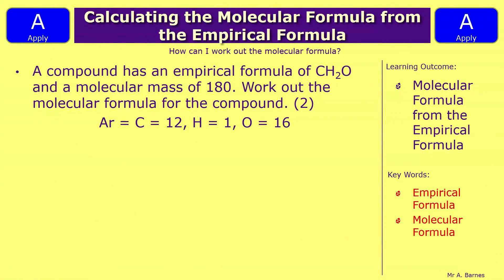We'll look at one question for this then. So it says, a compound has an empirical formula of CH2O and a molecular mass of 180. Work out the molecular formula for the compound, which is worth two marks. And you've got the atomic masses below. So pause the video, have a think, and have a go.